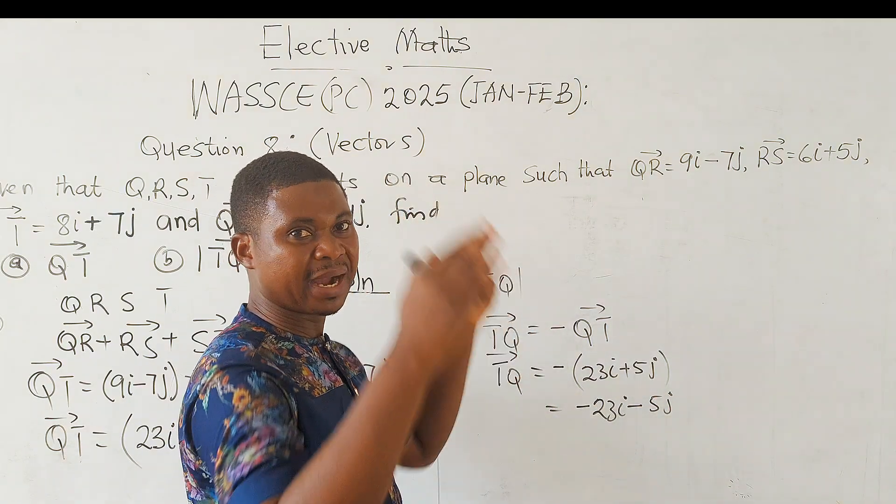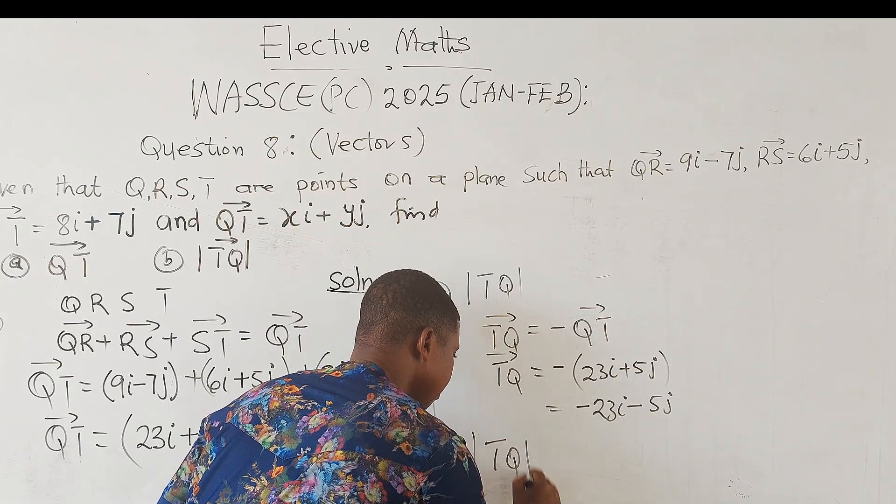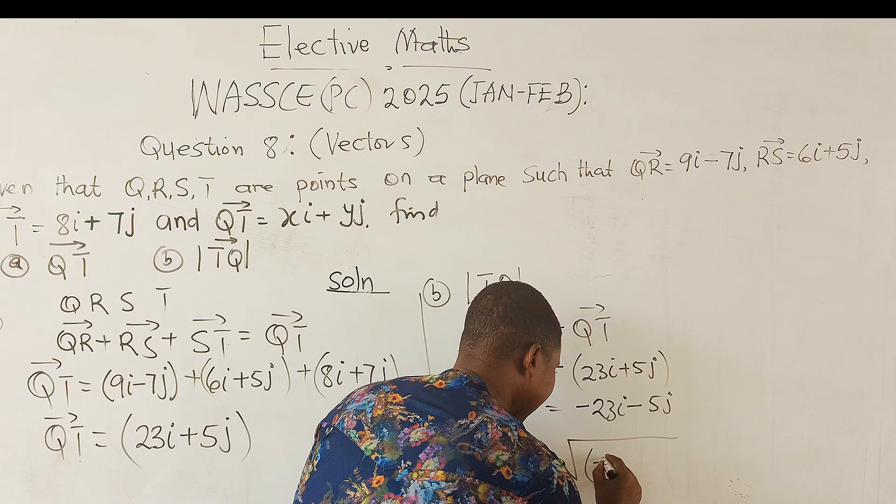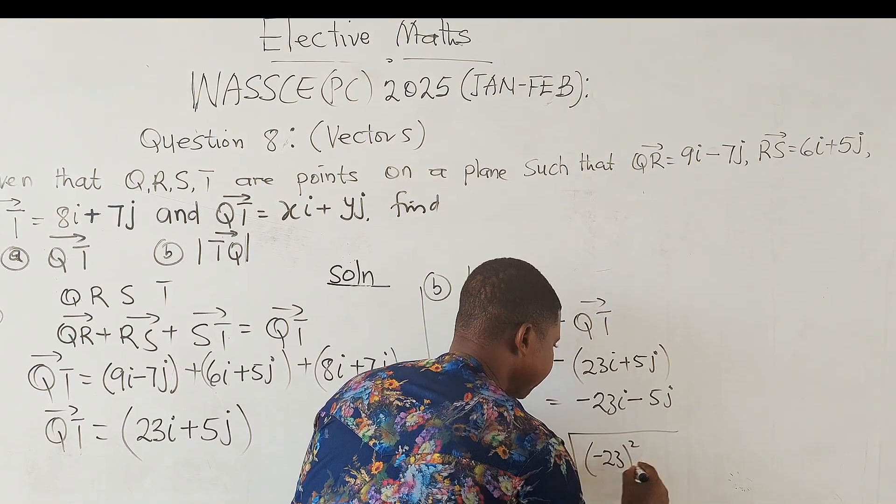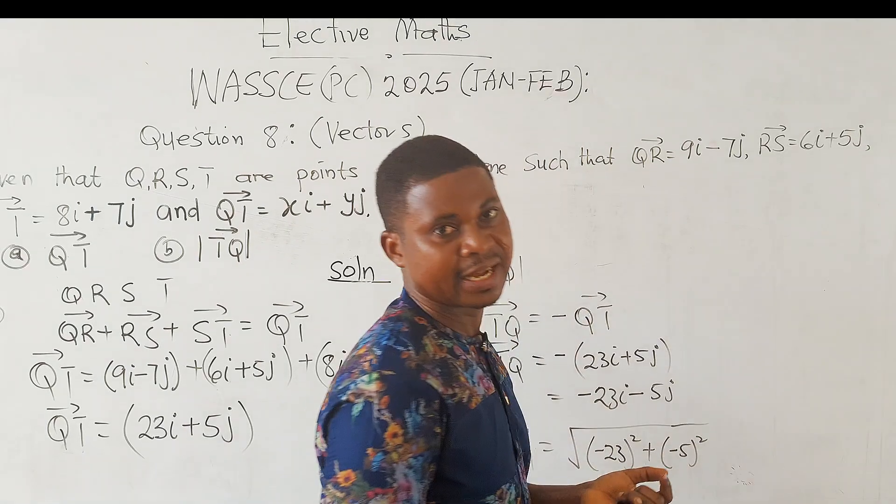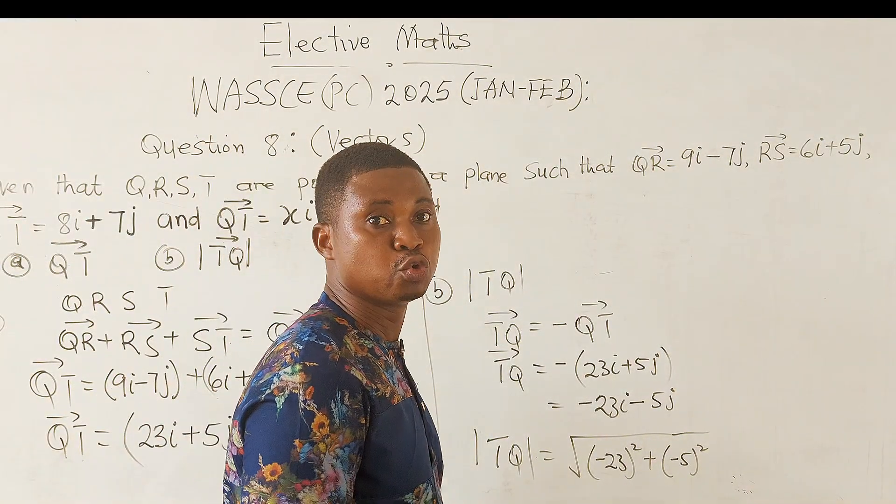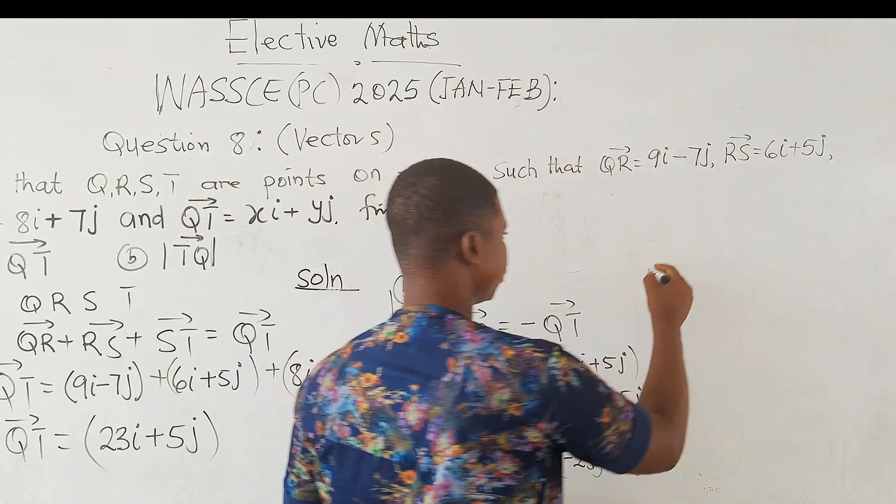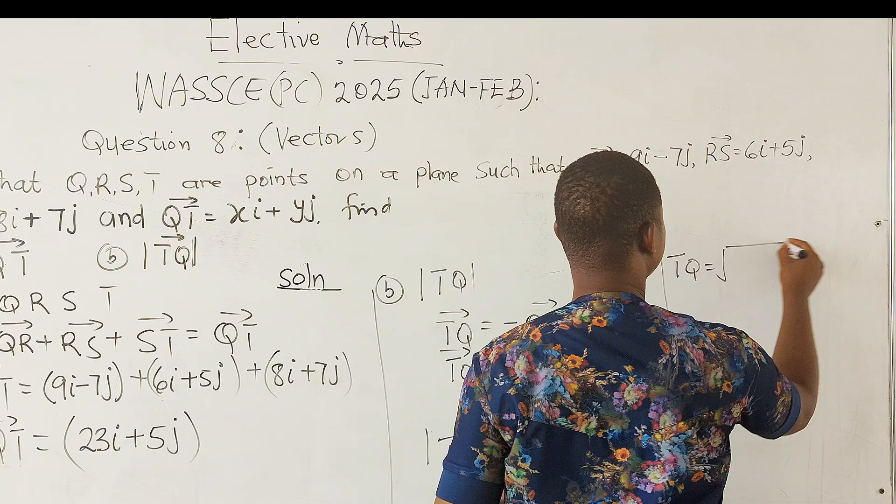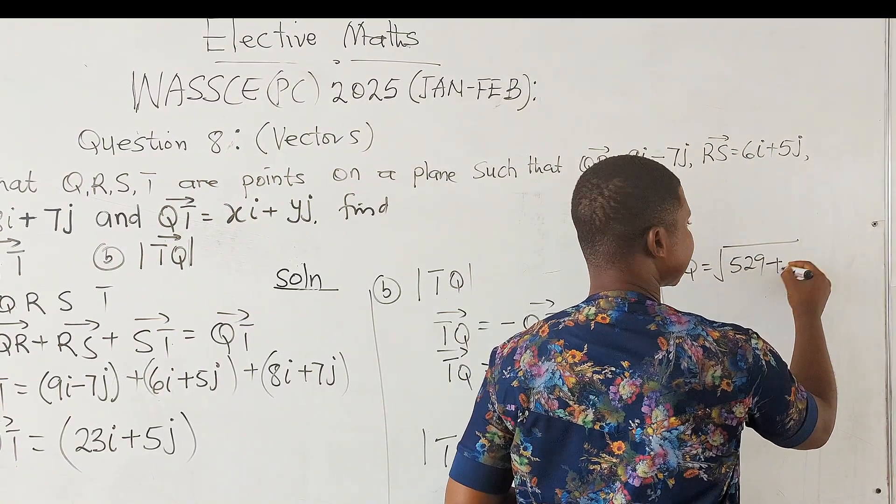Now we are going to find the magnitude of this. So the magnitude is equal to the square root of (-23)² plus (-5)². And (-23)² gives you 529.